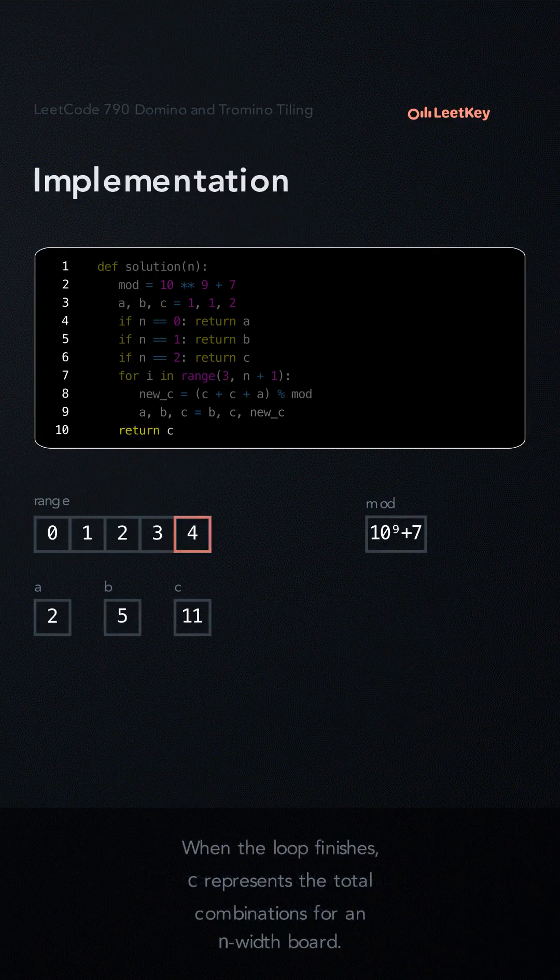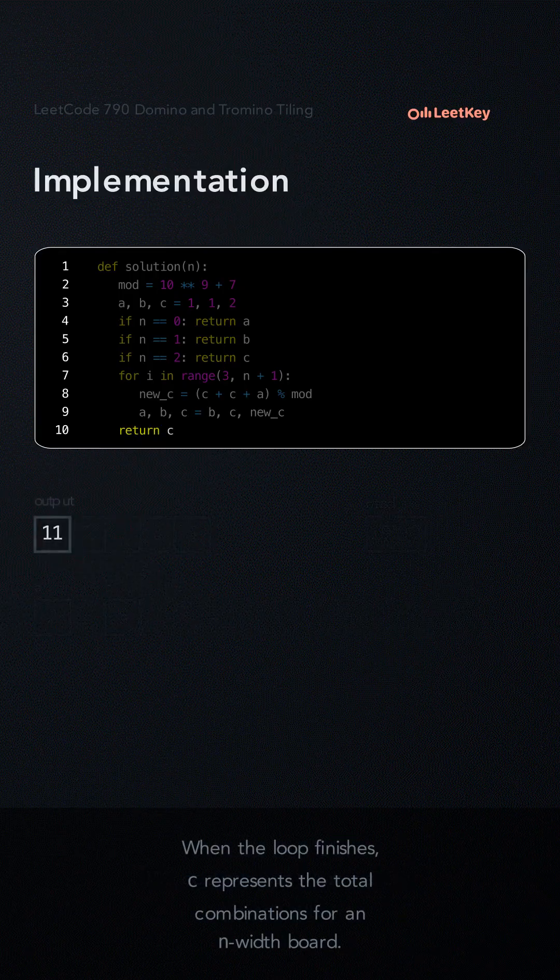When the loop finishes, C represents the total tiling combinations for an n-width board.